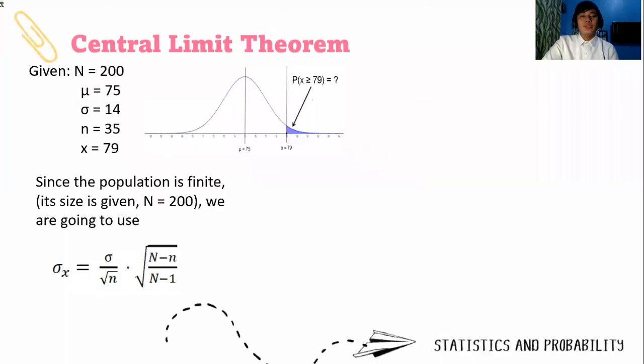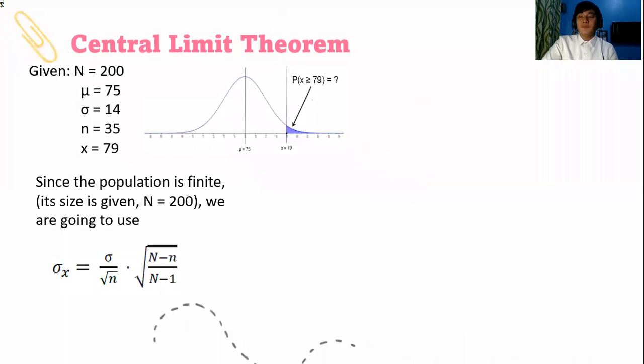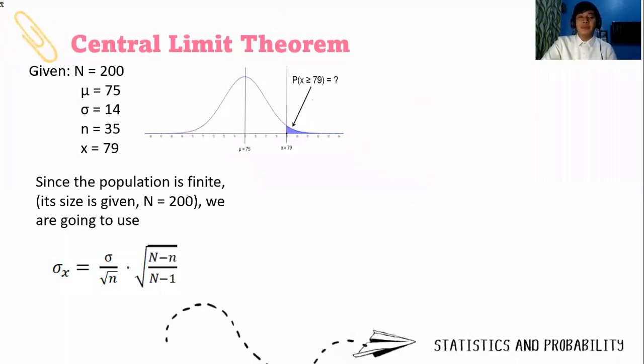Since the population is finite, we use this formula: σ sub x̄ equals σ over the square root of n times the population correction factor, square root of capital N minus small n over capital N minus 1.